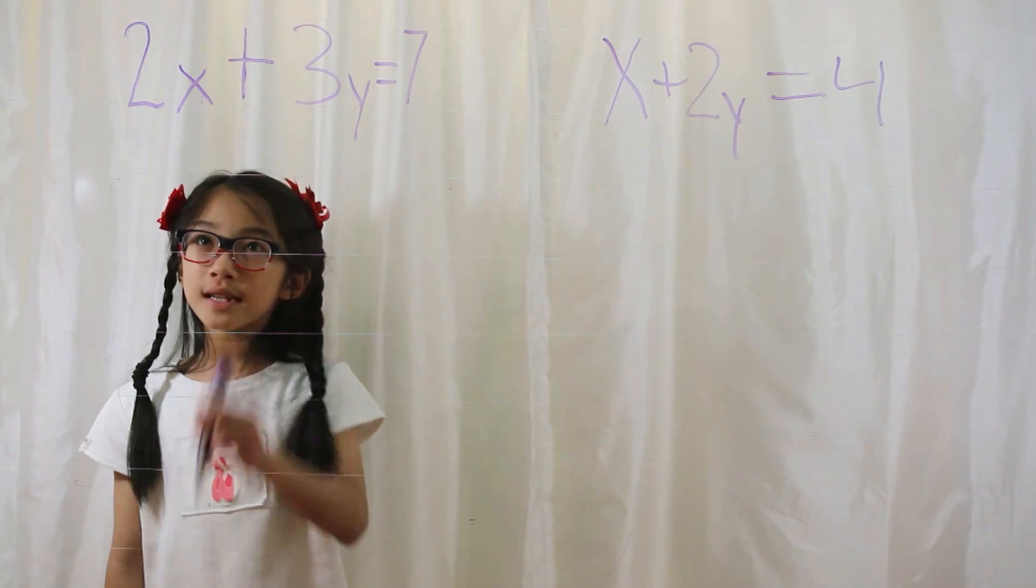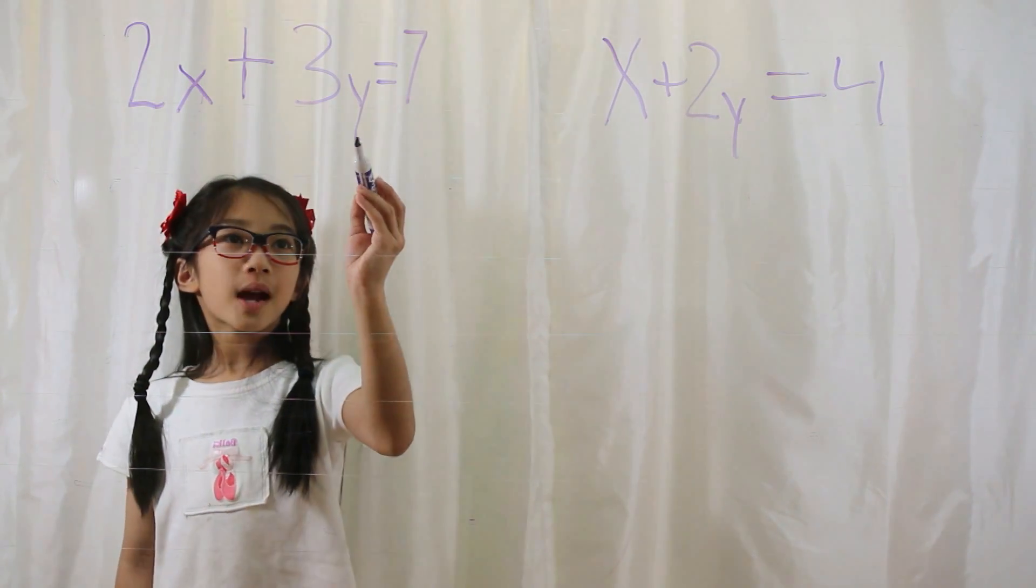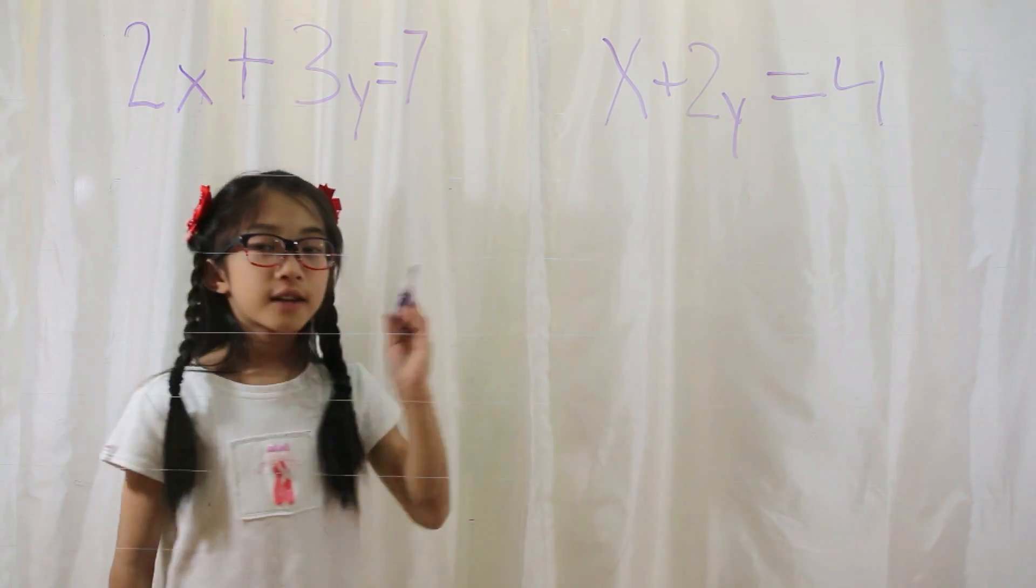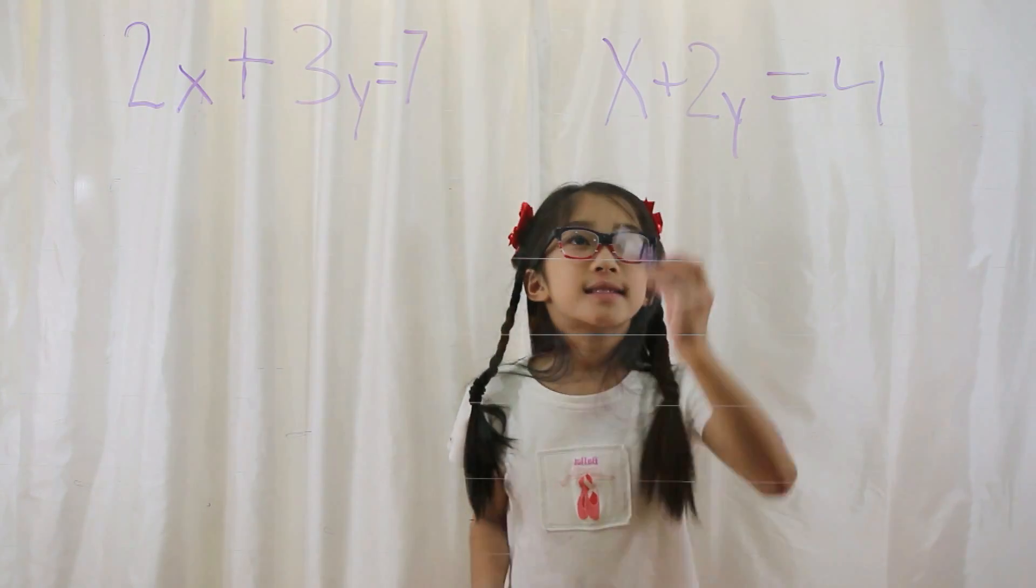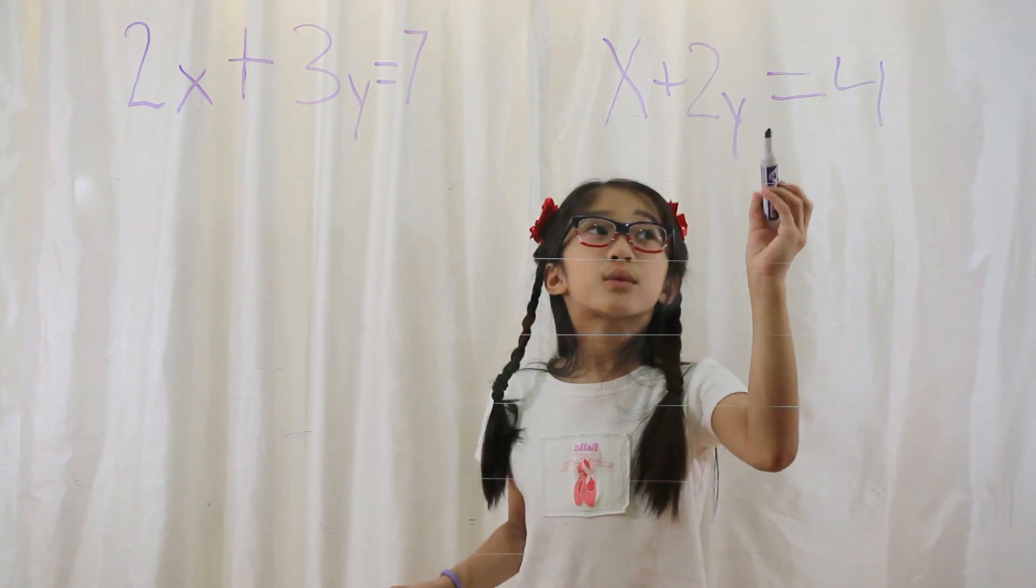Let's say you have the equation 2x plus 3y equals 7, and your other equation is x plus 2y equals 4.